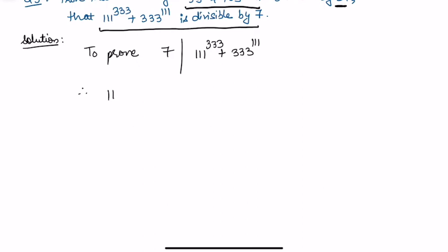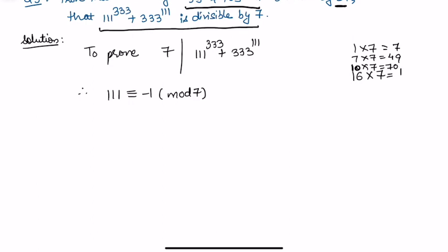We note that 111 is congruent to minus 1 modulo 7. How do we know this? If we multiply 16 by 7, we get 112. So 112 minus 1 is 111, and since 112 is divisible by 7, we confirm that 111 ≡ -1 (mod 7). This makes it easy to raise any power using the congruence property.